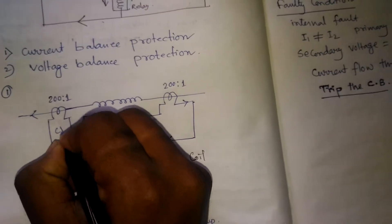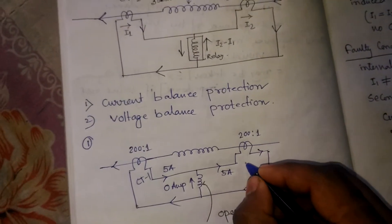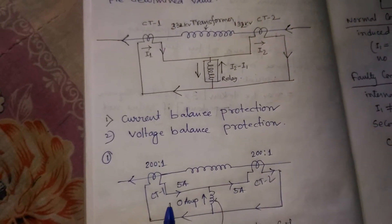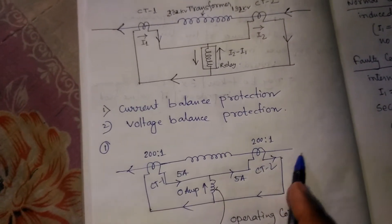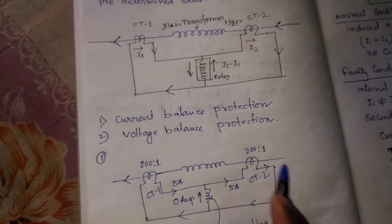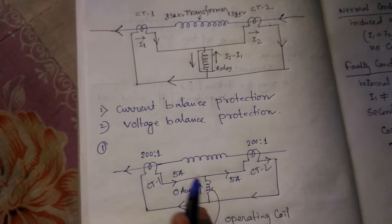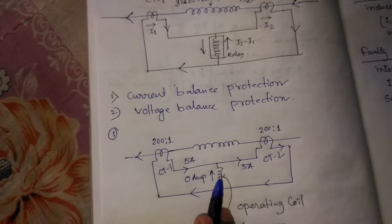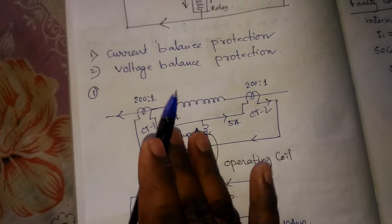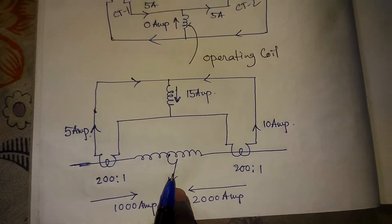The current flowing from CT1 is 5 amperes and the current flowing from CT2 is also 5 amperes. So the I2 minus I1 current is zero — zero current is flowing to the operating coil of the relay, so the relay will not operate.